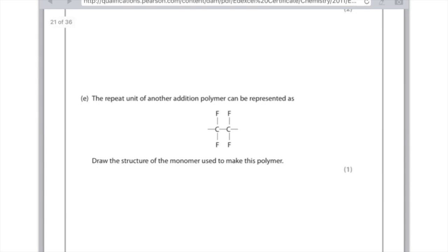The repeat unit of another addition polymer can be represented as the following. Draw the structure of the monomer used to make this polymer. When you're drawing the monomer, make sure the monomer has a double carbon bond. So that's all I'm going to do here is insert it, and then just make sure that carbon therefore has four bonds. And there is your answer.